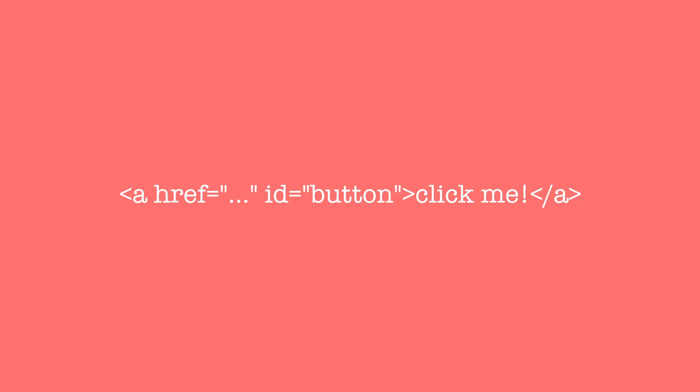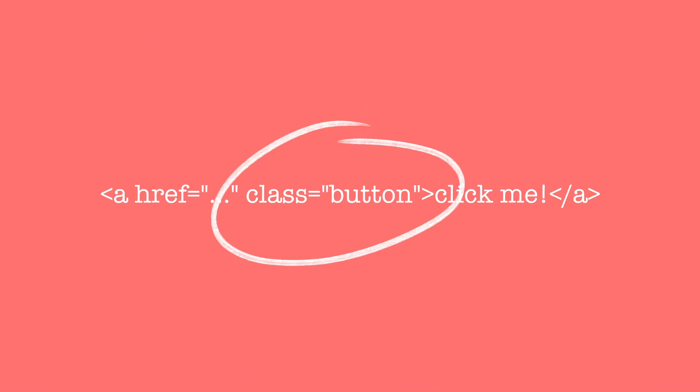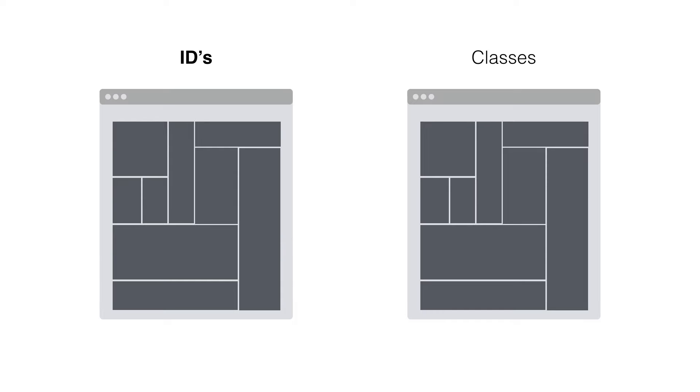The first of these special attributes is called an ID and it looks like this. The second of these special attributes is called a class and it looks like this. So let's talk about the differences between these two special attributes. Starting with IDs: each web page can have only one element with any given ID, and only one ID can be given to any specific element.